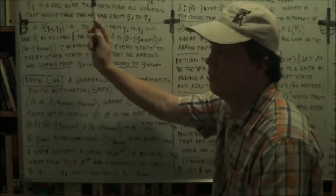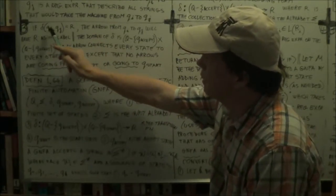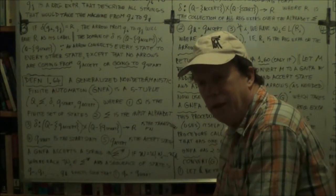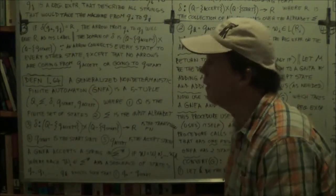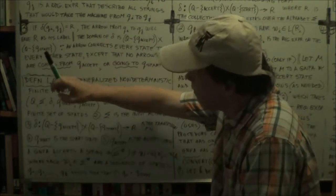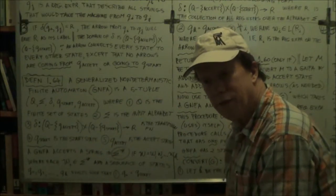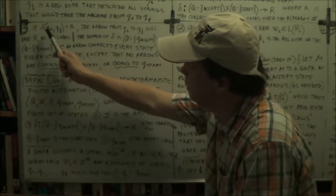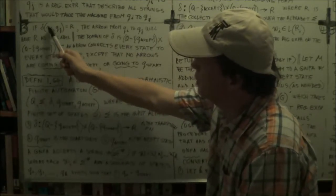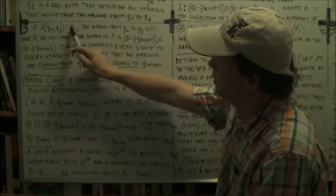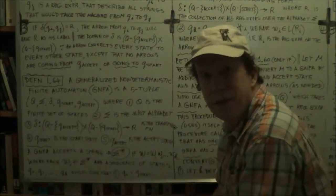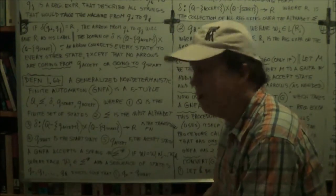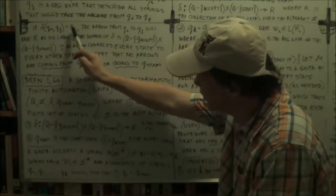Now, at the end of the previous session, we were talking about the delta function for the transition function for a GNFA, and it's a little different, remember, from the transition function for a finite automaton. Here, the two inputs of your transition function are two states, and the output, R, is a regular expression. So it's not like a next state, right? It's different, it's a regular expression.